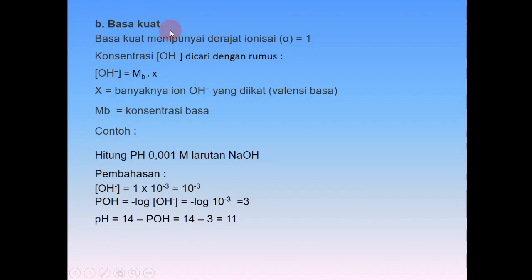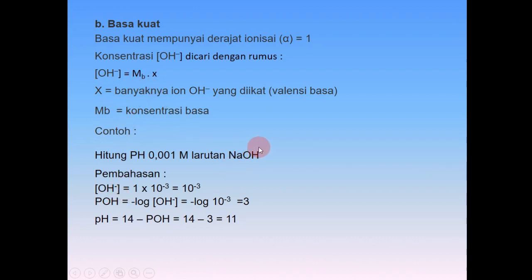Basa kuat memiliki derajat ionisasi α = 1. Rumus konsentrasi OH- = x × Mb, di mana x adalah banyaknya ion OH-. Contoh soal: hitung pH dari 0,001 M larutan NaOH. NaOH adalah basa kuat, x = 1, jadi [OH-] = 1 × 0,001 = 10⁻³. pOH = -log(10⁻³) = 3. pH = 14 - pOH = 14 - 3 = 11 (bersifat basa).